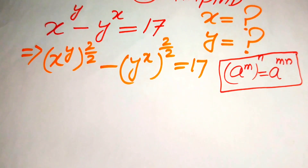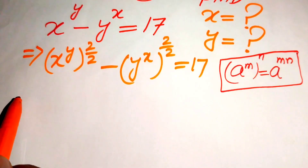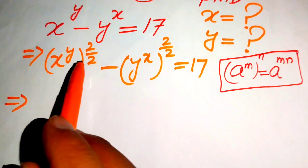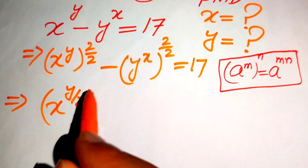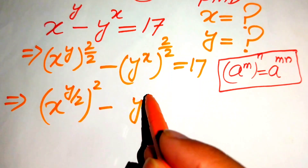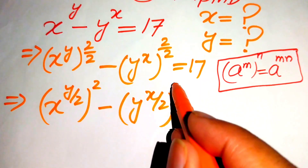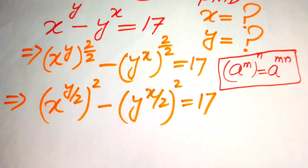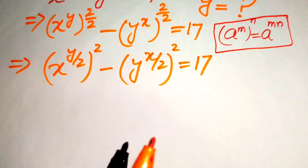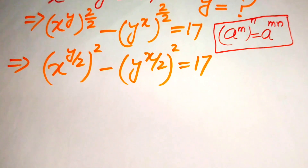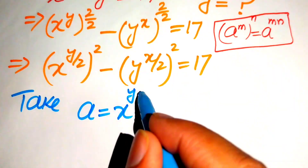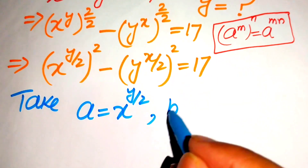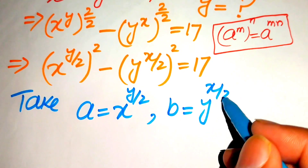Now we use this exponential law on the left hand side of this equation so that we write this term as x to the power of y over 2, whole squared, minus y to the power of x over 2, whole squared, equals to 17. We take a equals to x to the power of y over 2, and b equals to y to the power of x over 2.